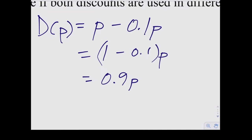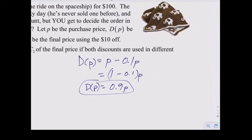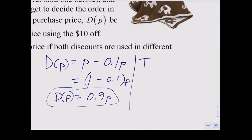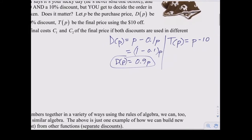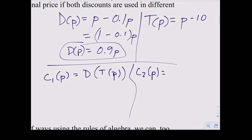D(p) = 0.9p. Now T(p), the ten dollars off: that's just p minus 10. Now we're going to compose these two functions. The first cost C1 as a function of price is D(T(p)), and the second cost C2 is T(D(p)). C1 and C2 represent taking the discounts in different orders.